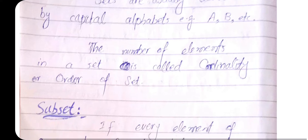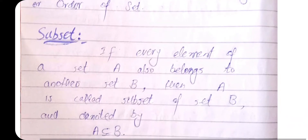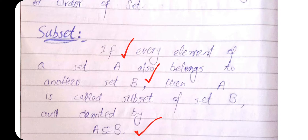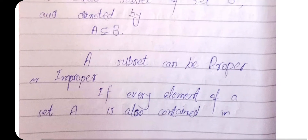Definition of subset: if every element of a set A also belongs to another set B, then A is called a subset of B, represented by the notation A ⊆ B. All the elements of A belong to B, but not necessarily all elements of B belong to A — there may be some elements in B that do not belong to A.